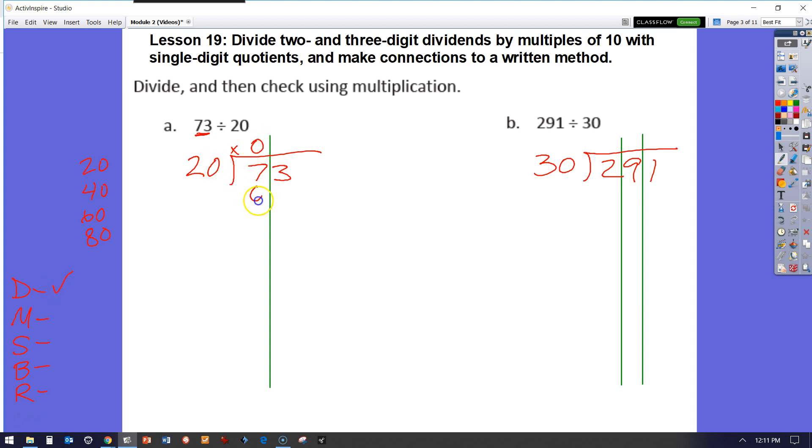Multiplication, 0 times 20 is 0. Check that off. Subtraction, 7 minus 0 is 7, and then we're going to bring down our 3. So now we have 73 divided by 20.